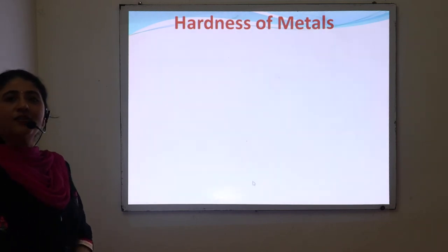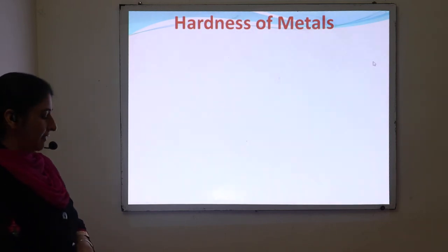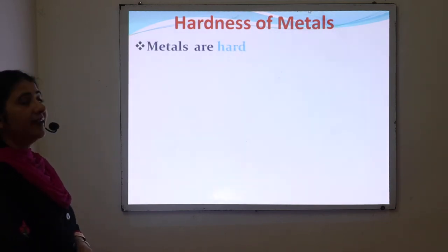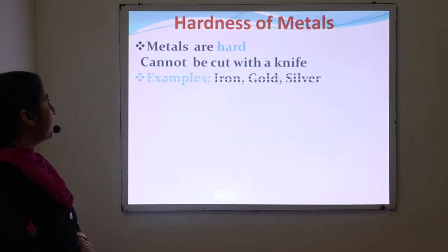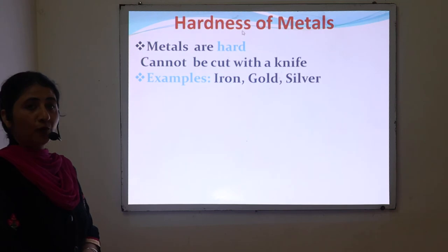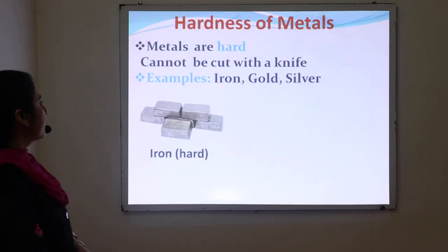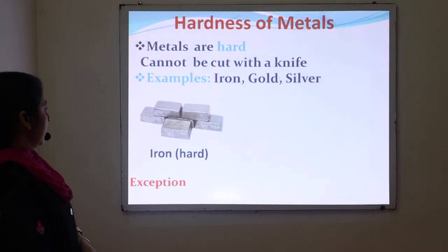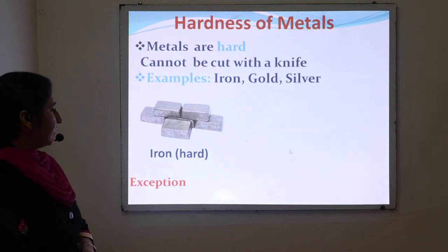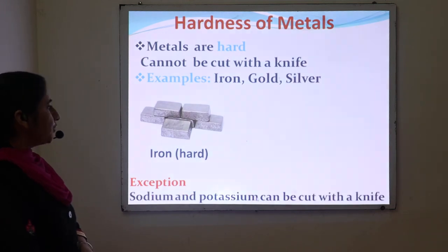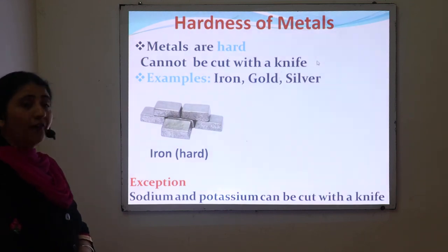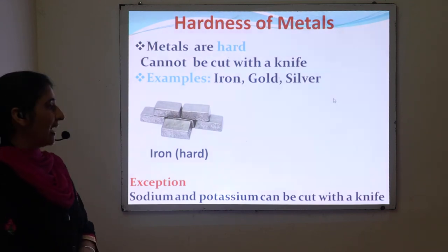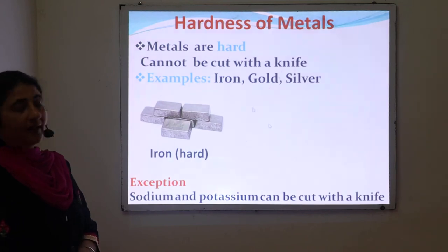Next is hardness of metals. Metals are generally hard in nature and cannot be cut with a knife — for example, iron, gold, and silver. However, there are a few exceptions: sodium and potassium are soft metals that can be easily cut with a knife.